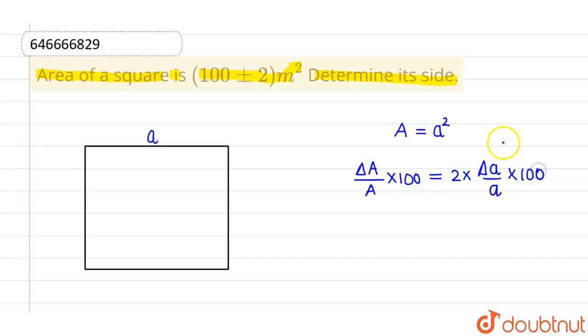So we know that percentage error, this is the percentage error which can occur in the measurement of area. So 2 by 100 into 100, this comes out to be 2%. 2% is the percentage error in area.